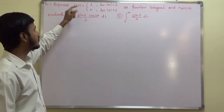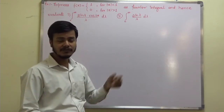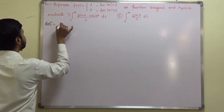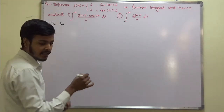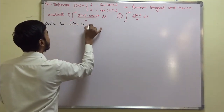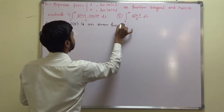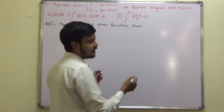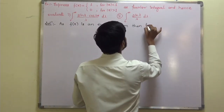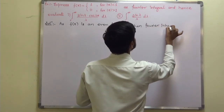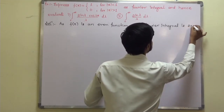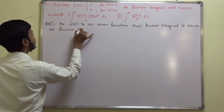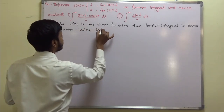This function is an even function because when you replace x by minus x, we are going to get the same value. So the function is an even function, and therefore the Fourier integral is the same as the Fourier cosine integral.